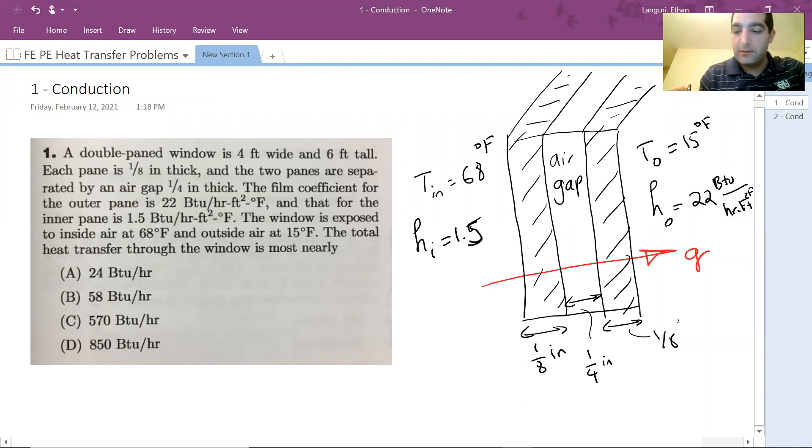The area is given as well. The window is 4 feet wide and 6 feet tall. So my height here is 6 feet, and into the screen, into the board, the dimension is 4 feet. So this way we can find the area.